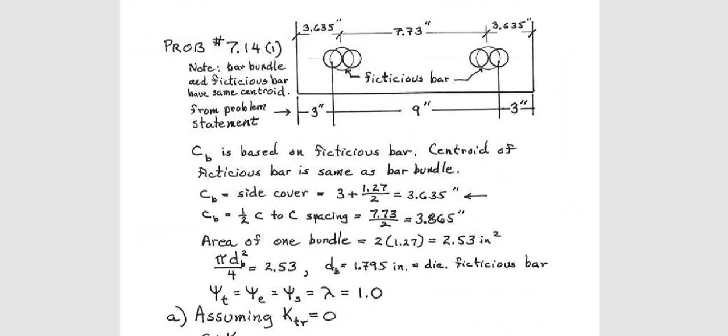So we discussed it then we will see the solution. So this is that problem. You can see here psi t, psi e, psi s, lambda everything is one I was already discussing. Then we need to make this bundle bar as a fictitious bar. Why? Because there is a part in that equation which uses fictitious bar. Whatever I was calculating the Cb it is here. Cb side cover is 3 plus half of this. Why? Because that 3 is in the center of the outside bar. Then to go to the center 3 plus I have to add this half here at the center.